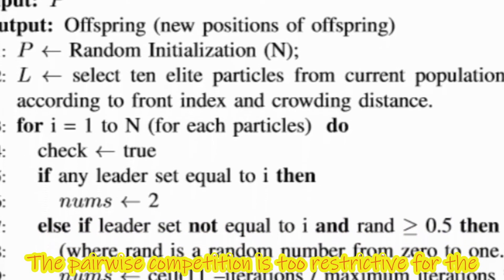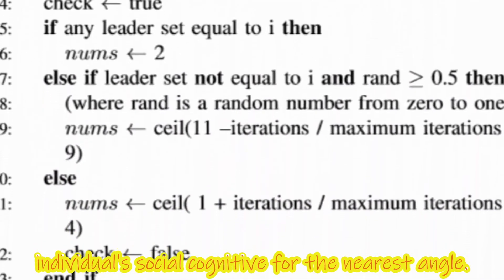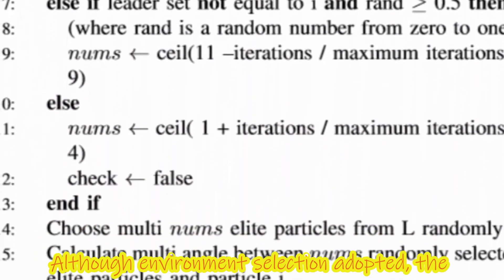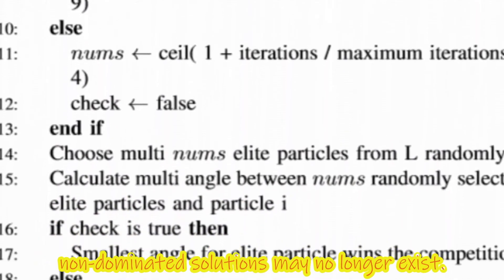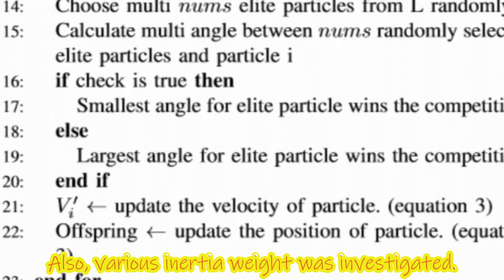The pairwise competition is too restrictive for the individual's social cognitive for the nearest angle. Although environment selection adopted, the non-dominated solutions may no longer exist. Also, various inertia weights were investigated.